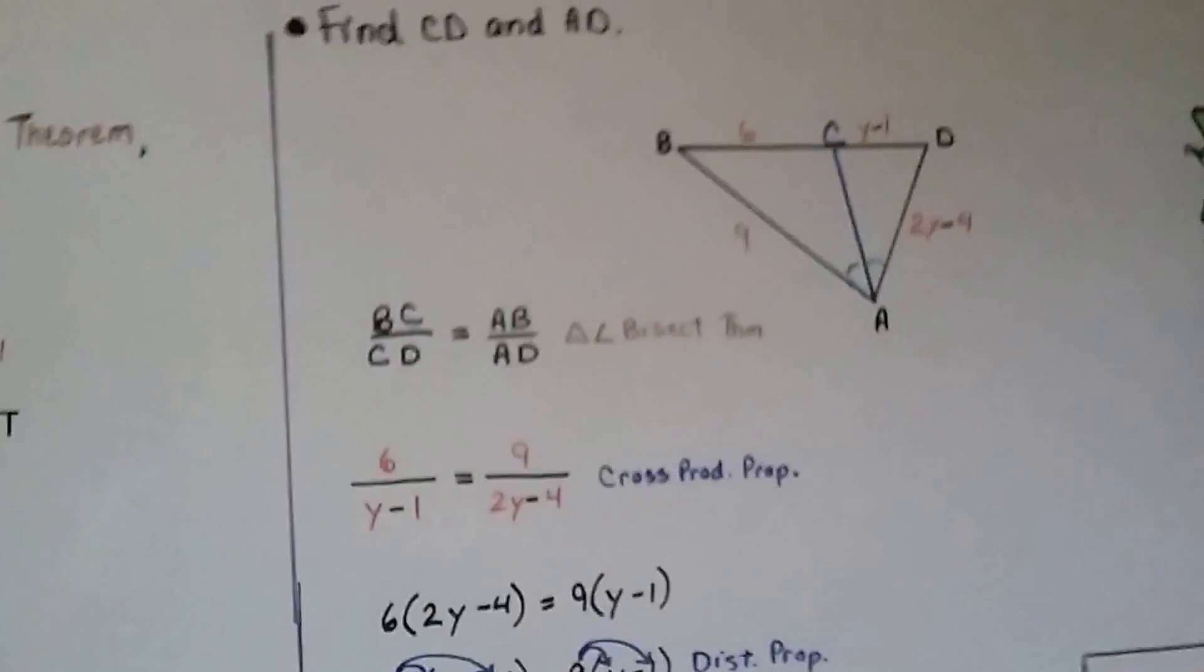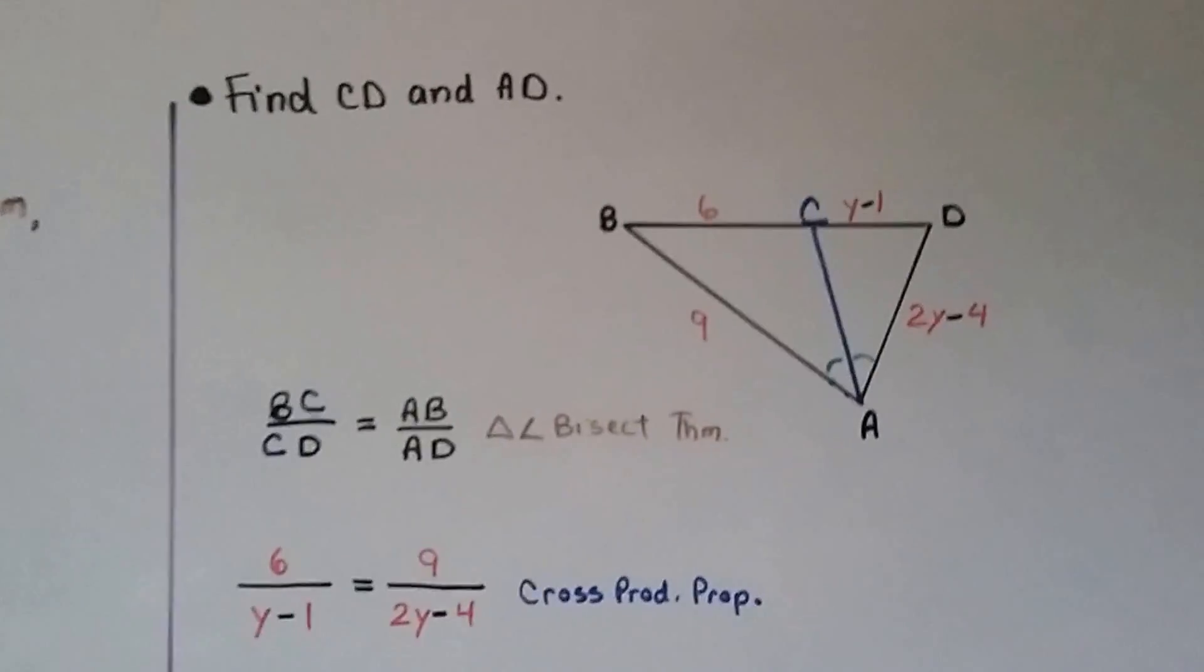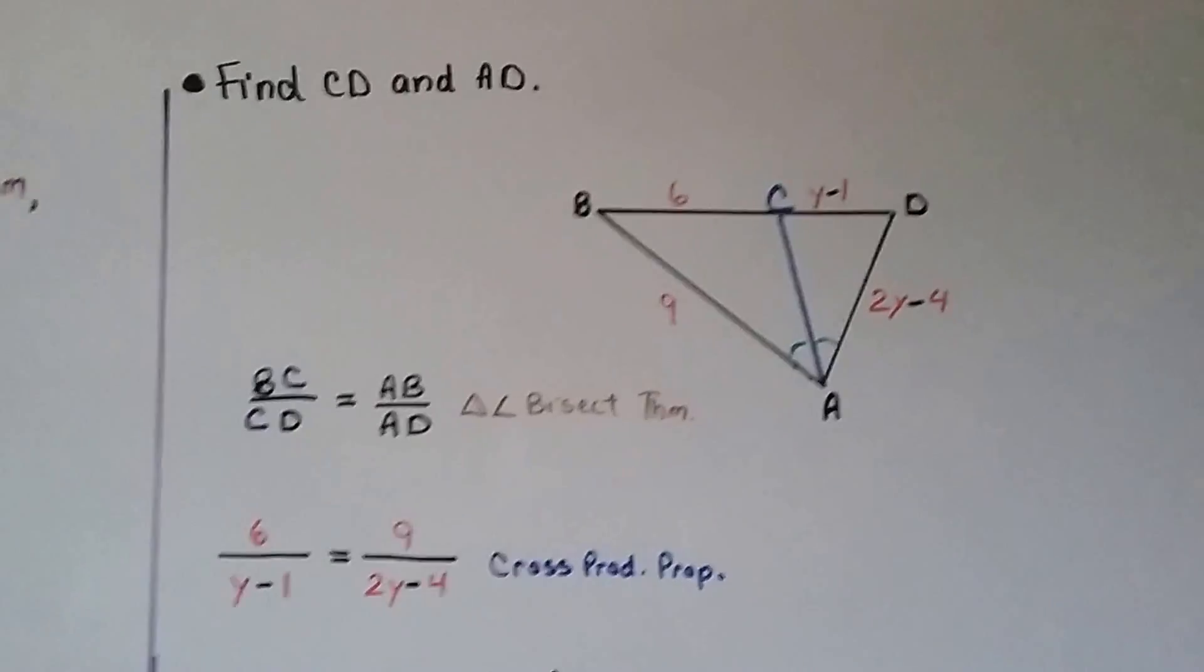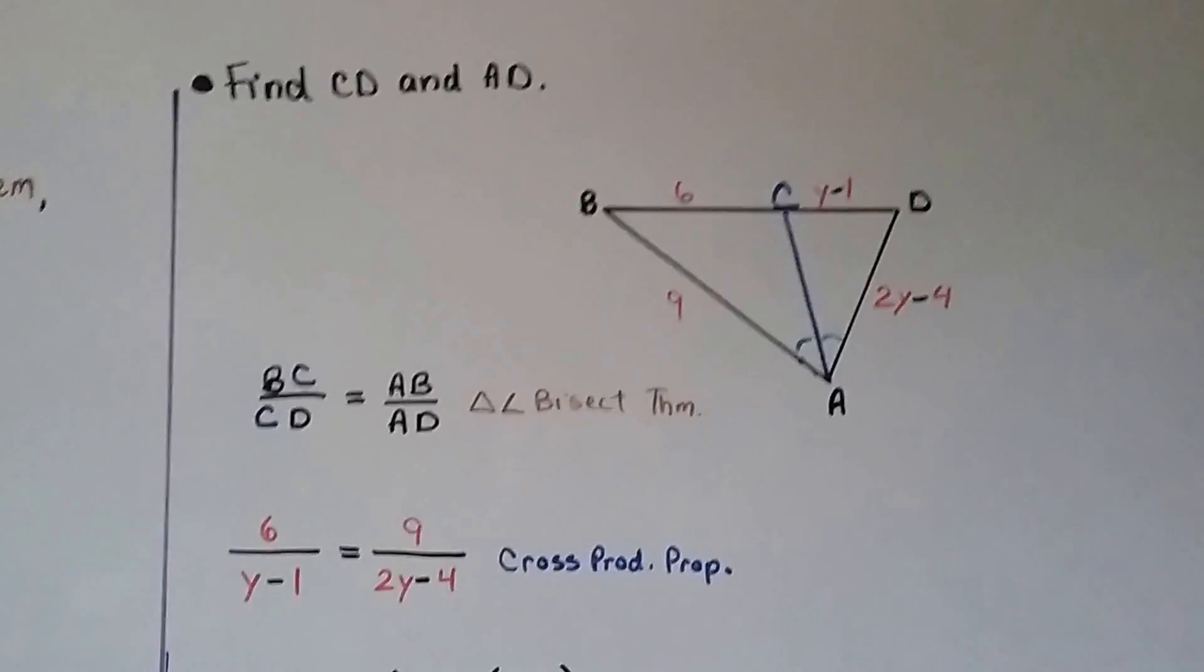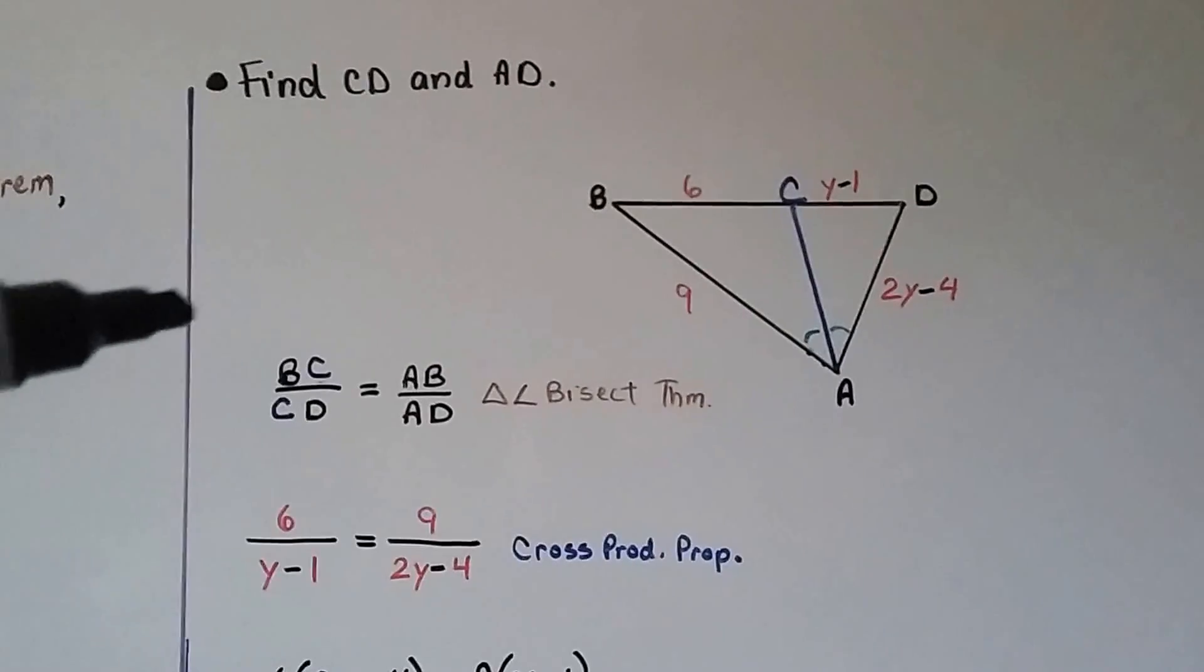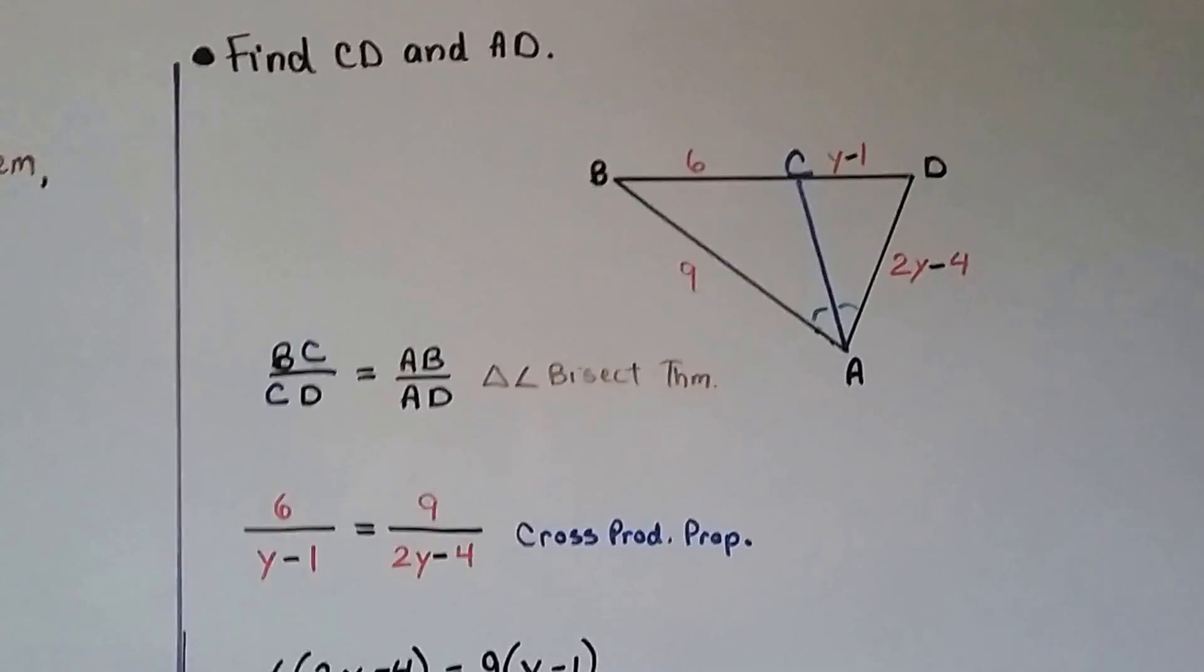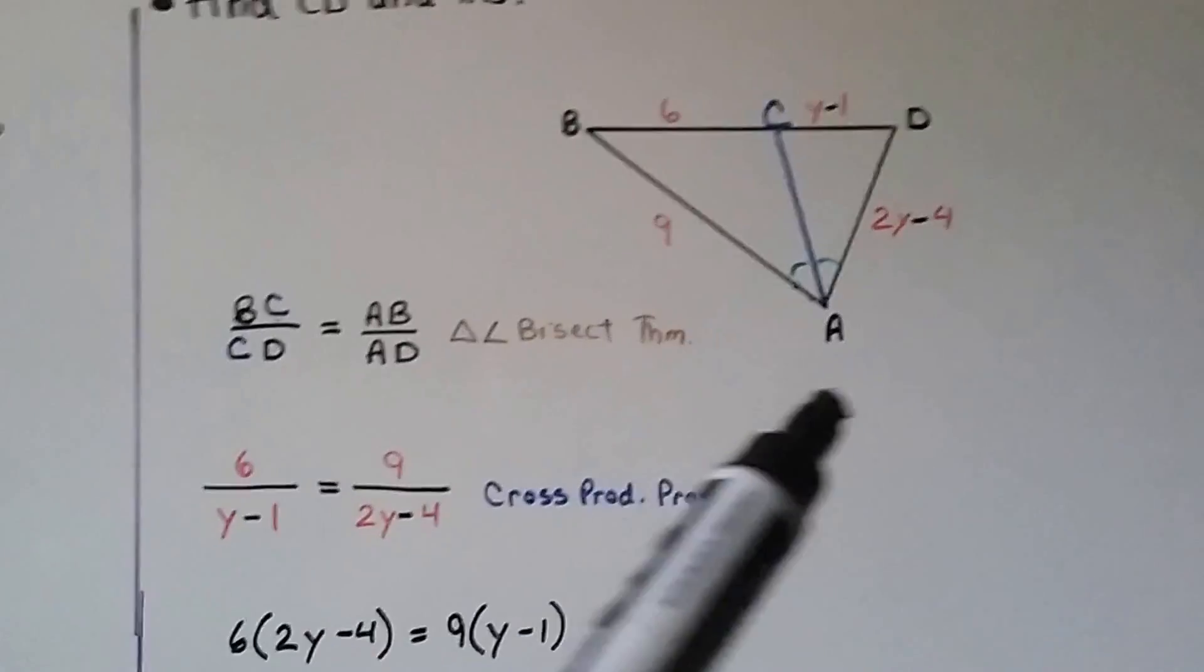Let's try one last one. We're going to find CD and AD. CD is y minus 1 and AD is 2y minus 4. Using the triangle angle bisector theorem, we write our proportion. We have BC over CD is equal to AB over AD.